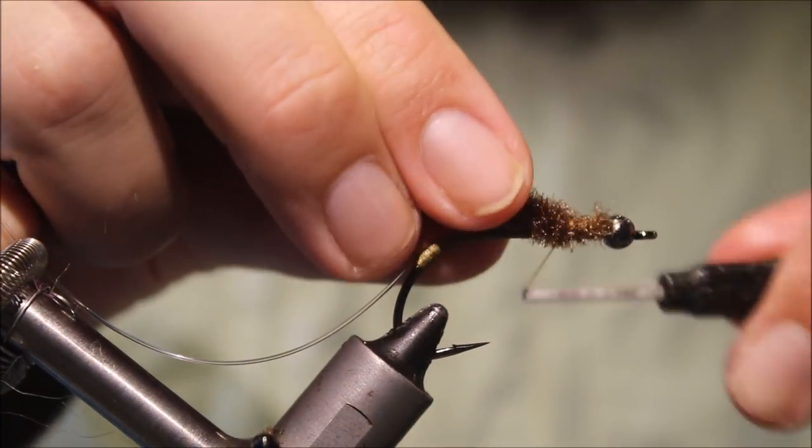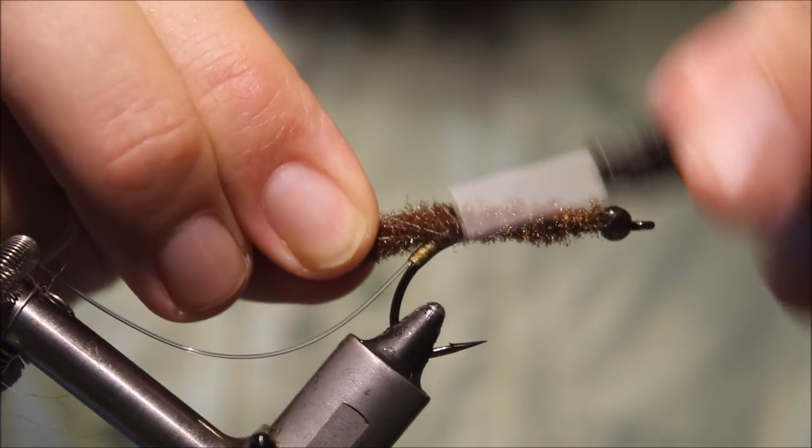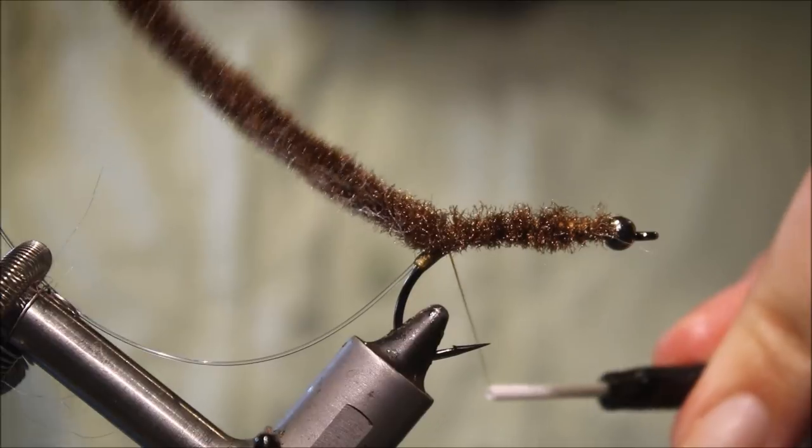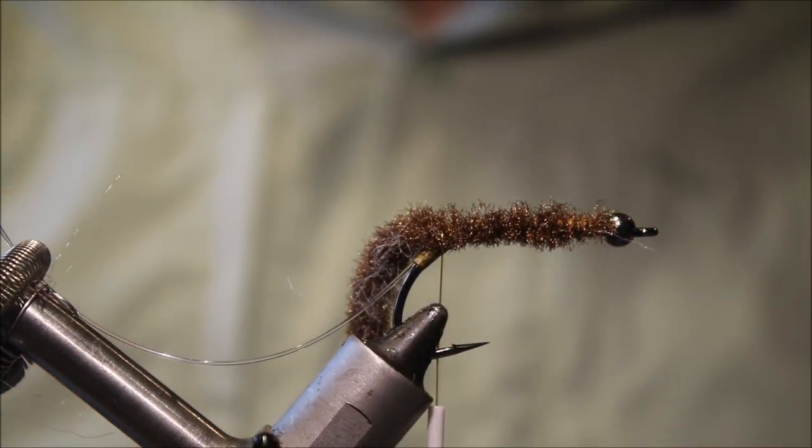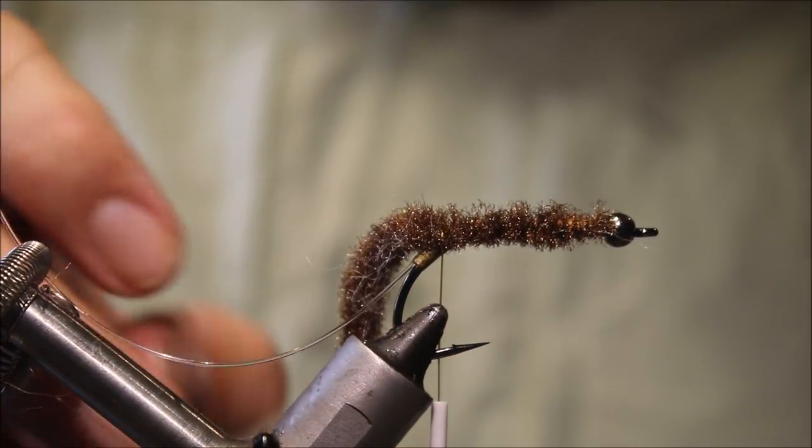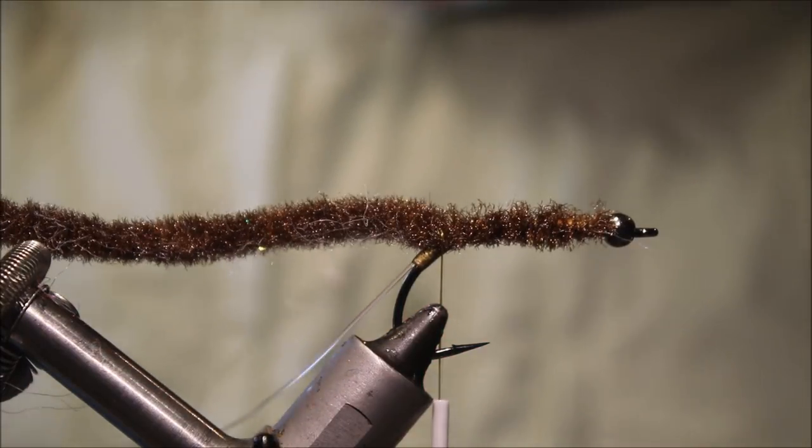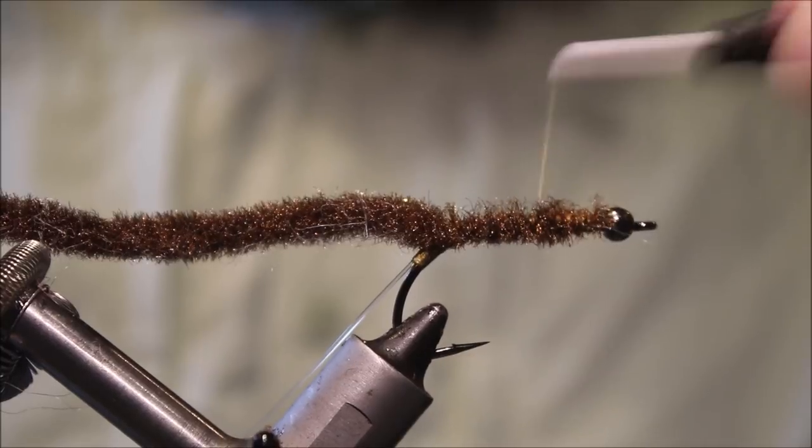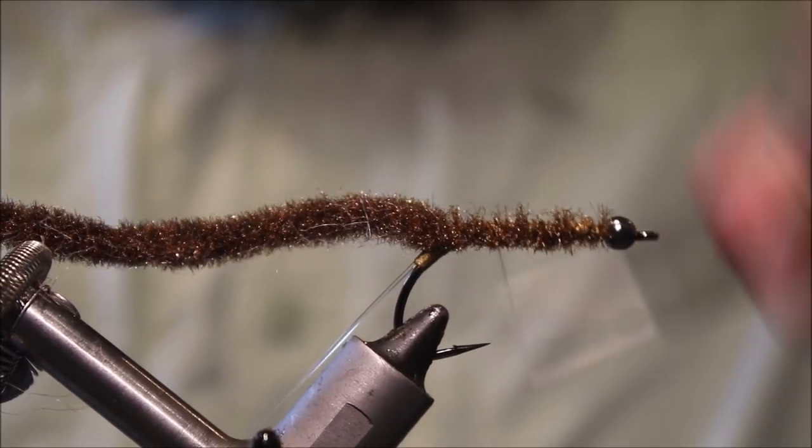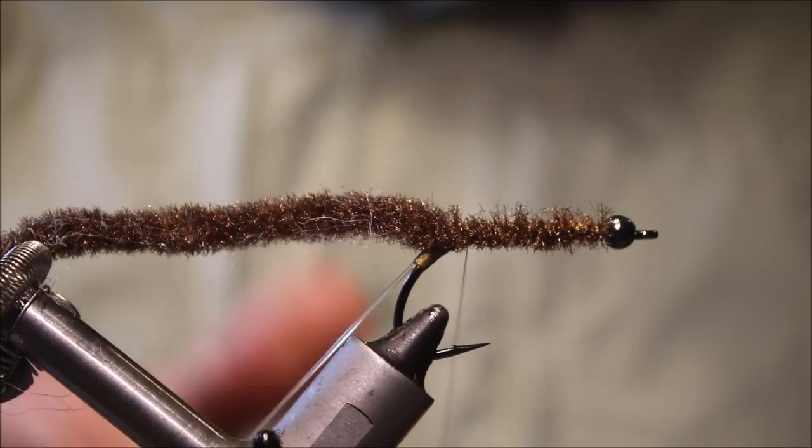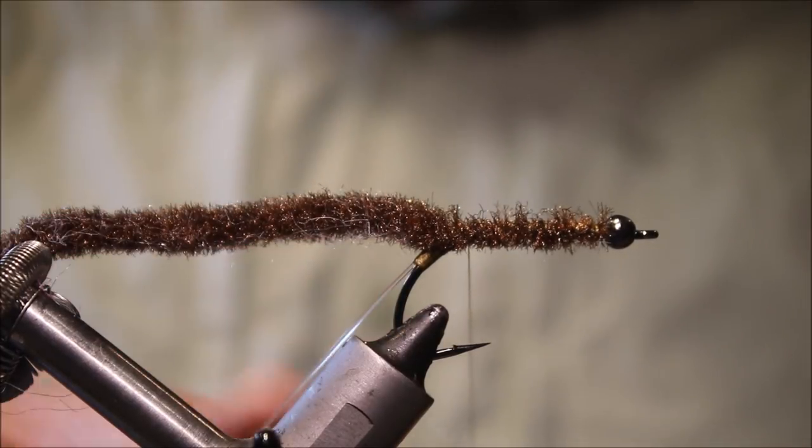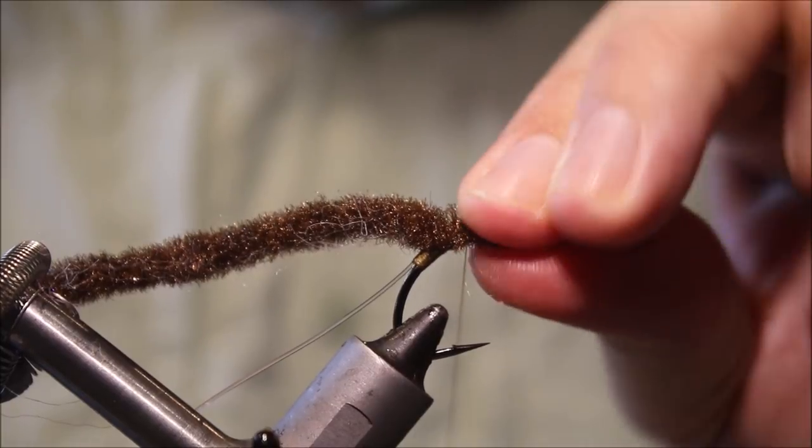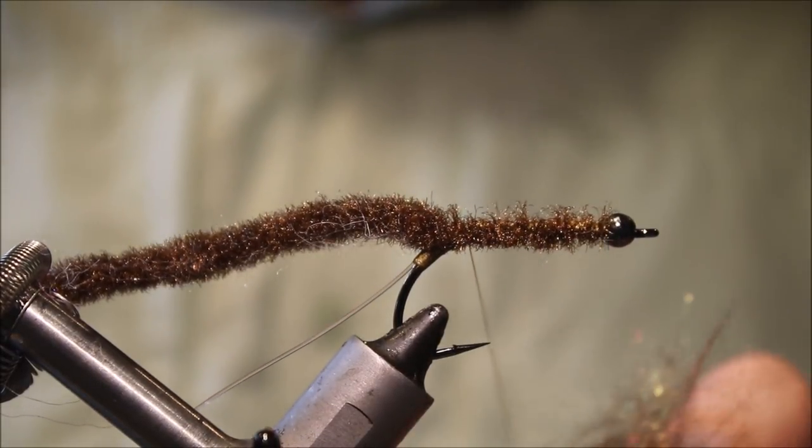And then I'll just catch in this chenille, and I'll stop about lining where the barb was before I crushed it. Right, and you don't need to worry about tying over that wet cement. That actually helps bind down the attack, adds a bit of durability to the chenille body, or the chenille tie-in point.